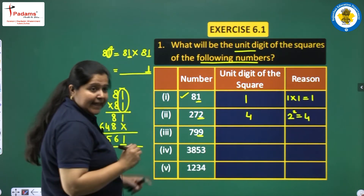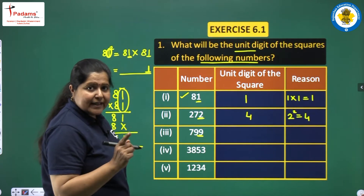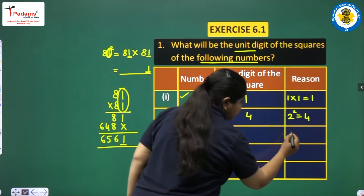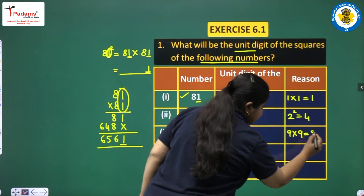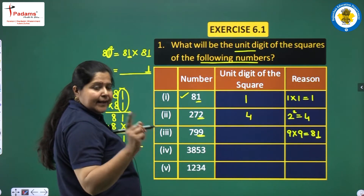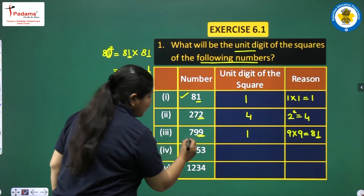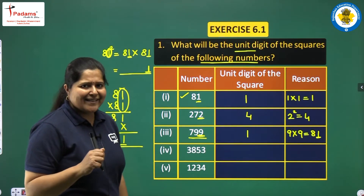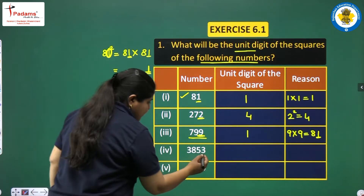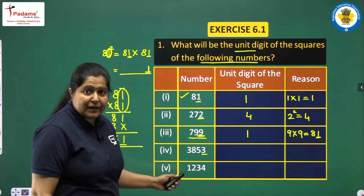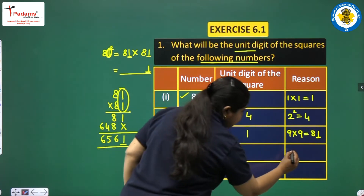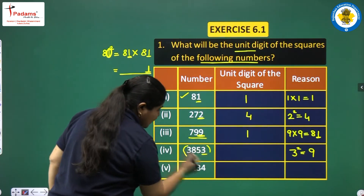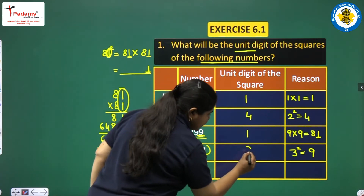For 799, the last digit is 9. We will just look at this last digit square: 9 into 9 is 81. The ones place digit of 81 is also 1. So the square of this whole number will end in 1.